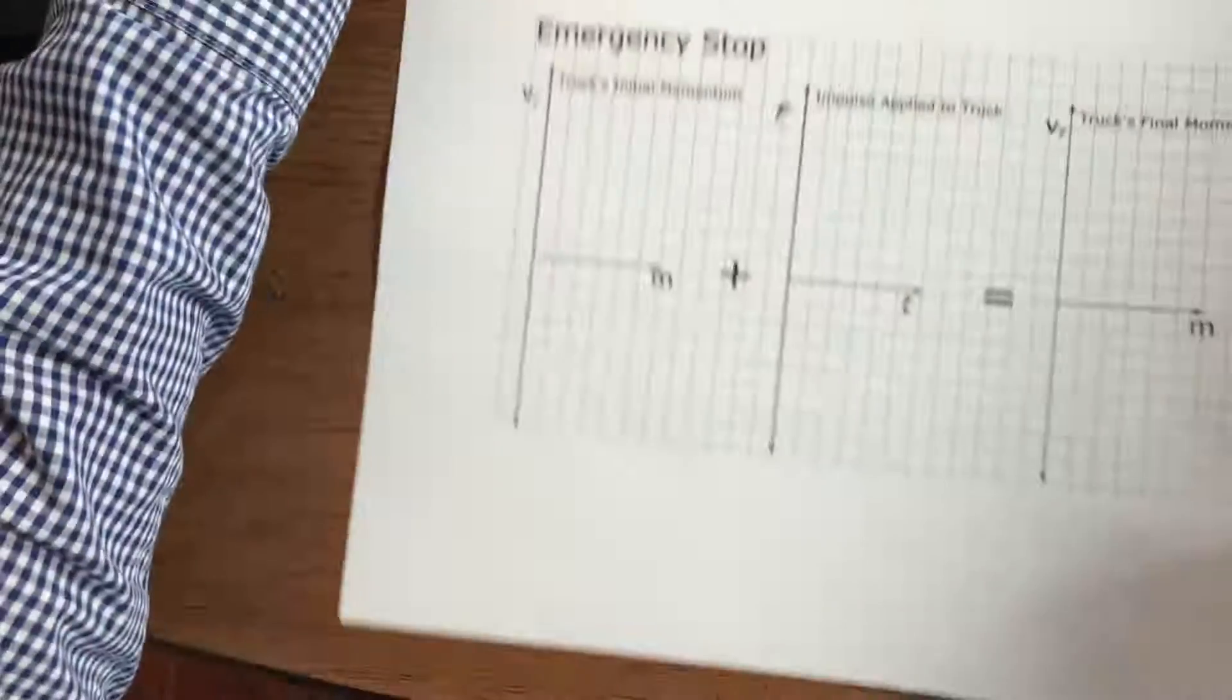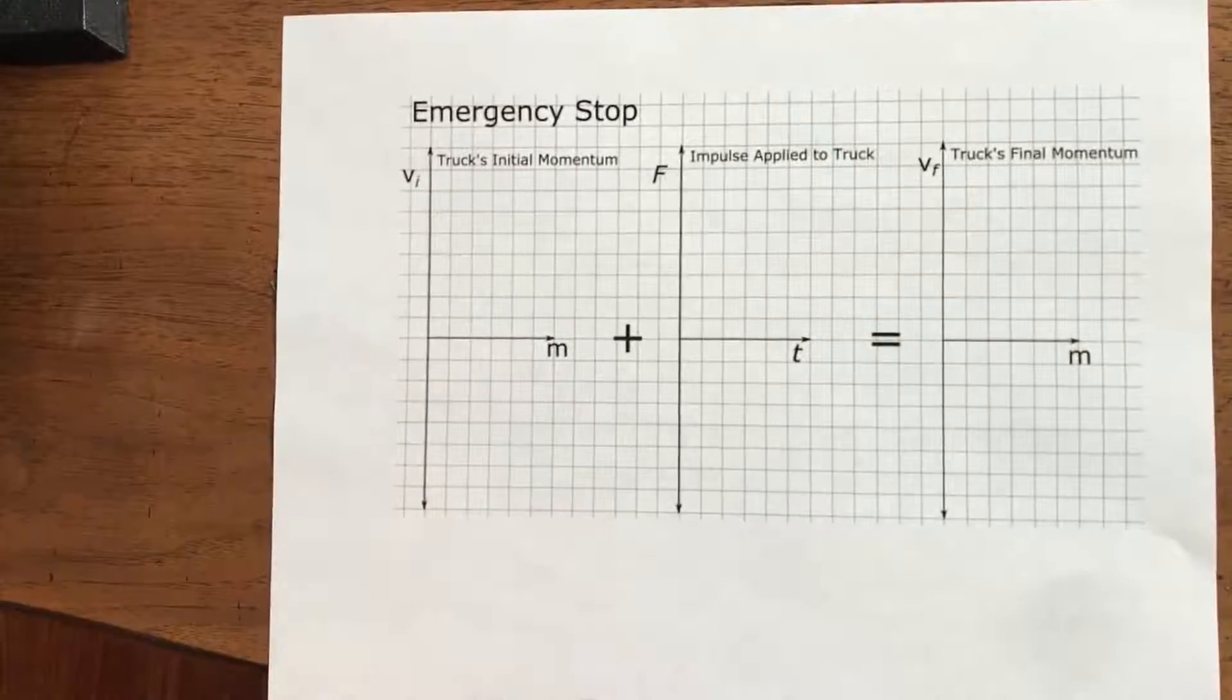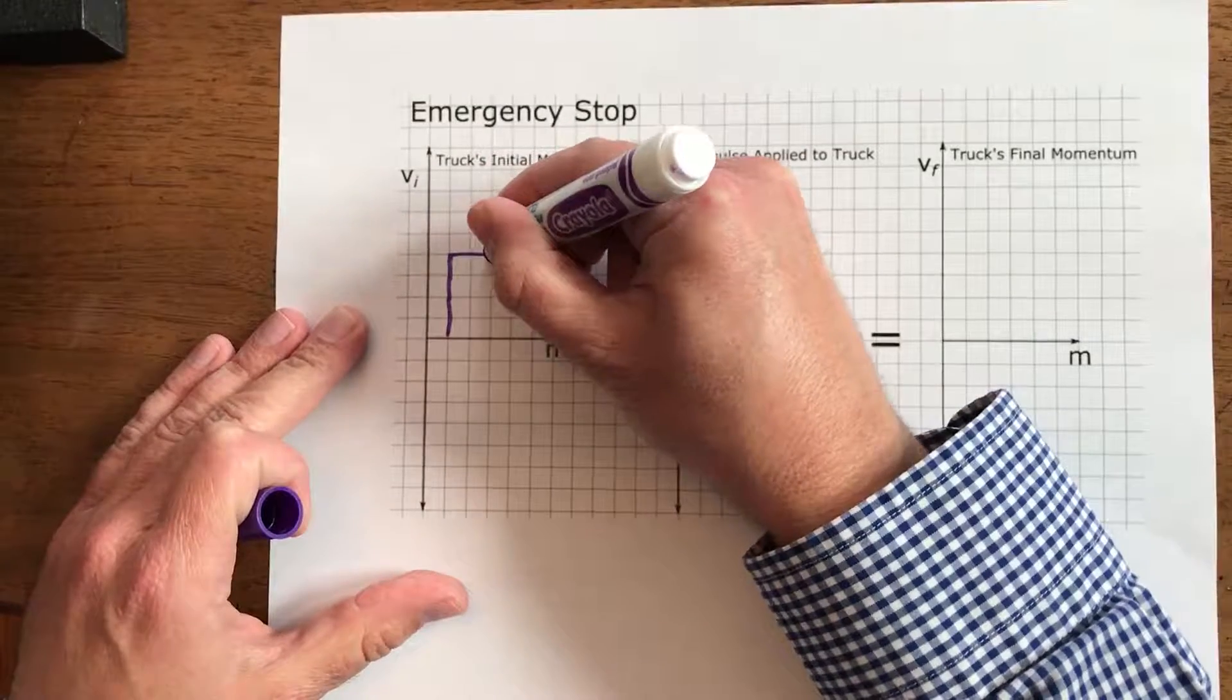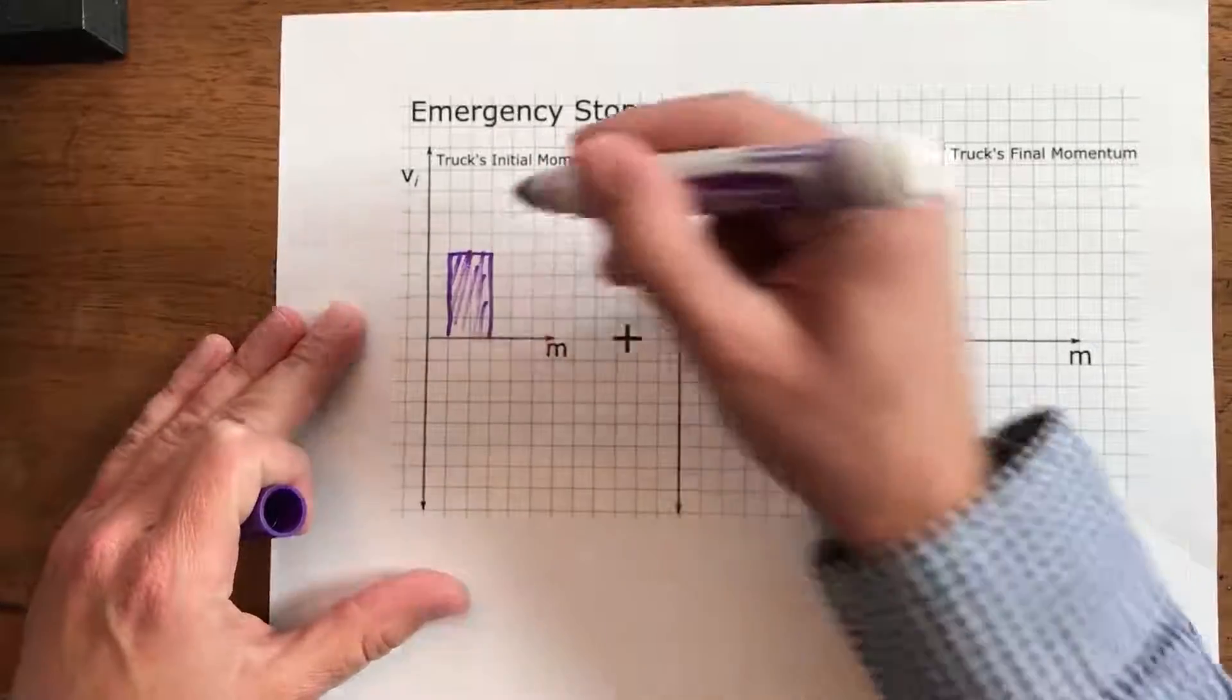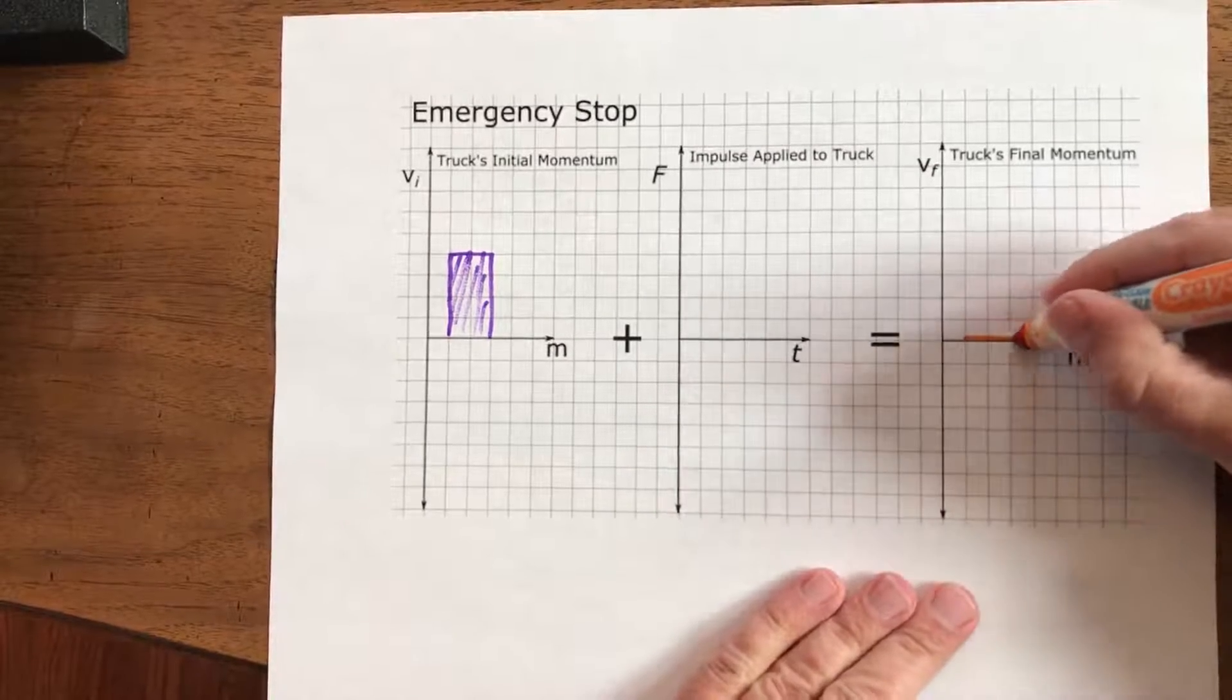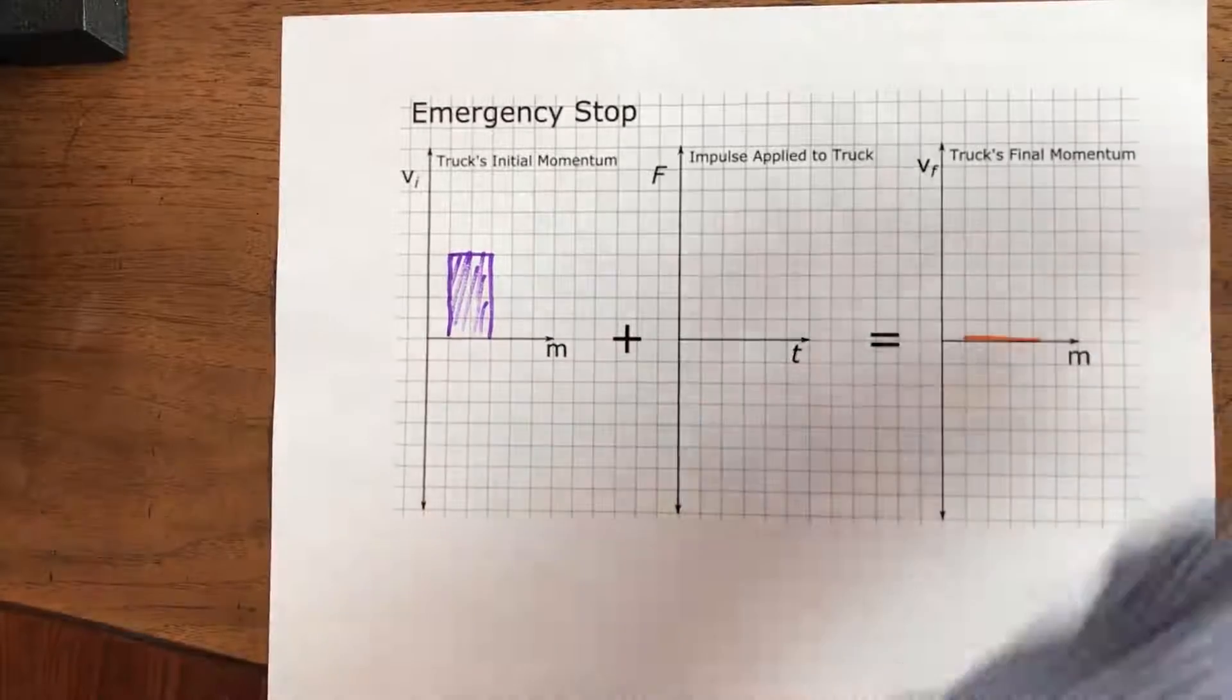So what would it look like if we made an emergency stop? Well first thing is I'm going to go back and give us the same one, two, three, four and then two wide. Again there's nothing to indicate that this is what you have to do, I'm just picking some numbers to start with. Once again our final momentum is going to be zero, there's going to be nothing there.